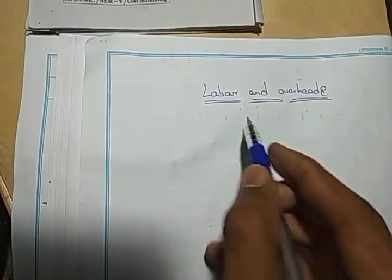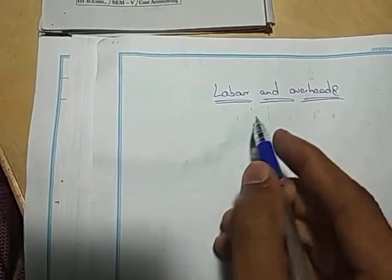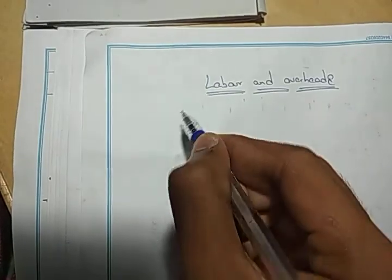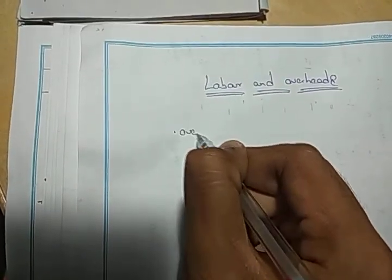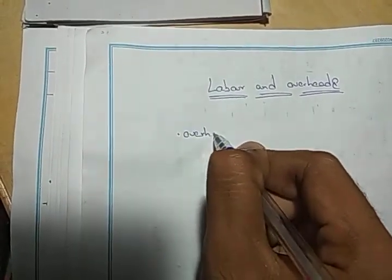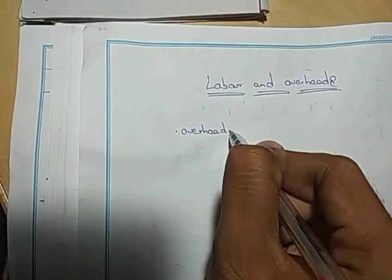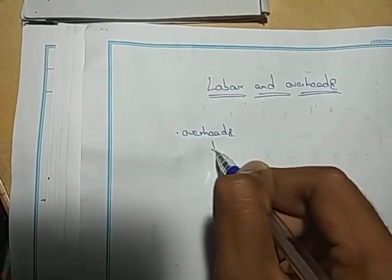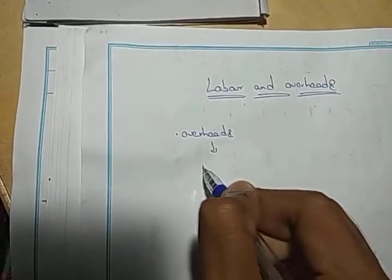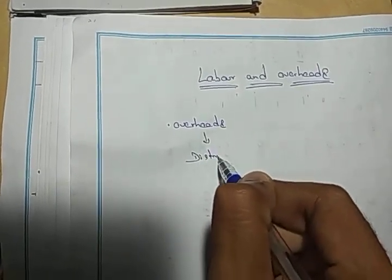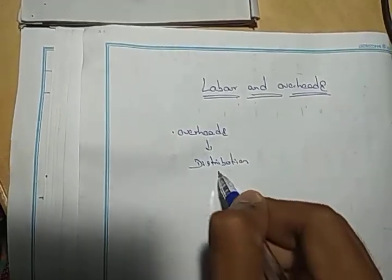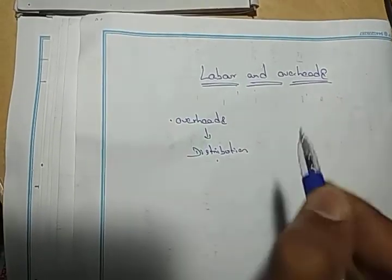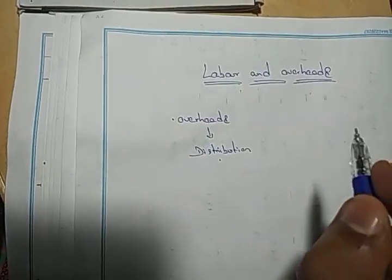In this concept, labor and overheads are discussed. Overheads distribution is covered in this concept, and there are three distribution types.